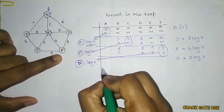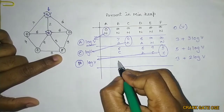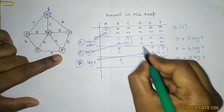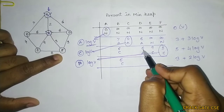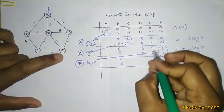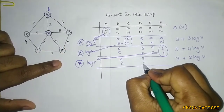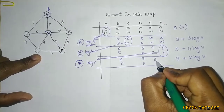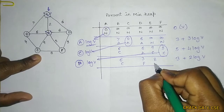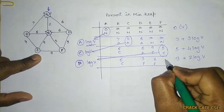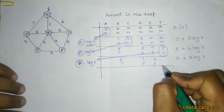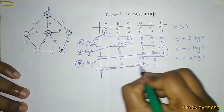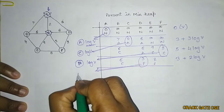From F, we update: for D, the new value via F is 3, so it becomes 3 with parent F (reduced from 6). For E, the new value via F is 8, reduced from 9, parent F. The next minimum is D (value 3), so we extract D, taking O(log V).